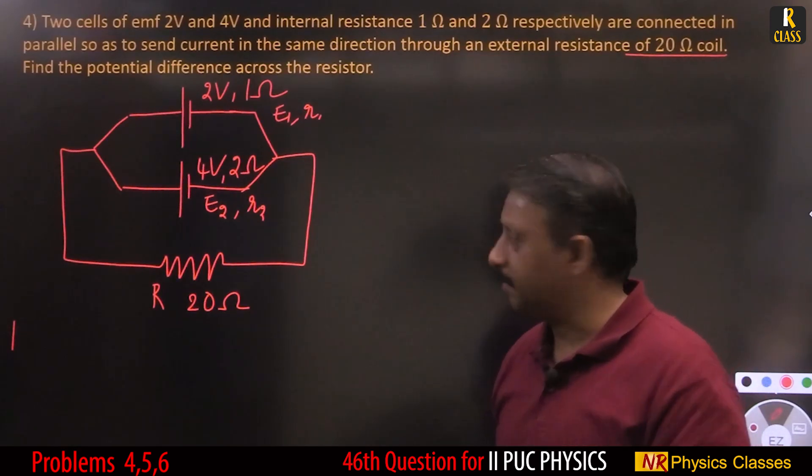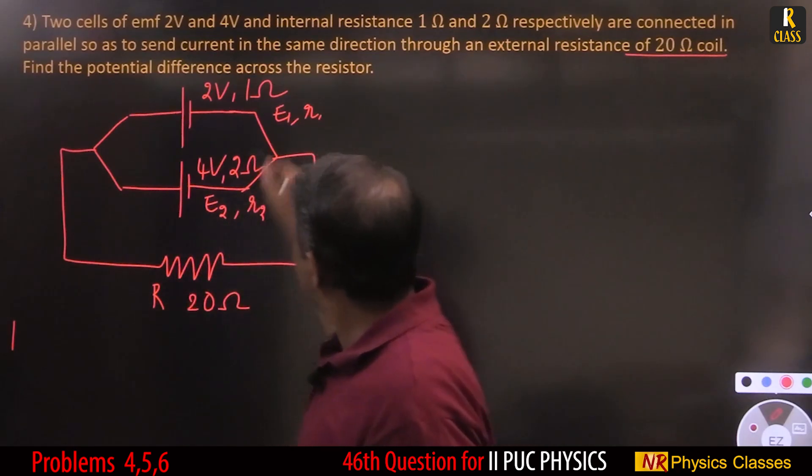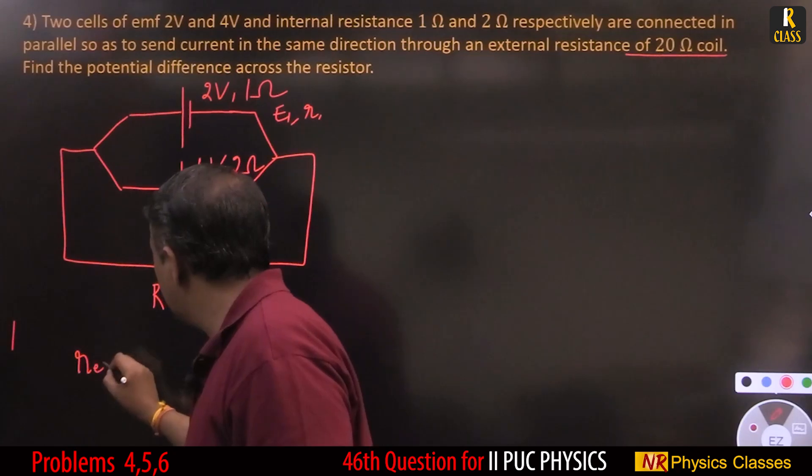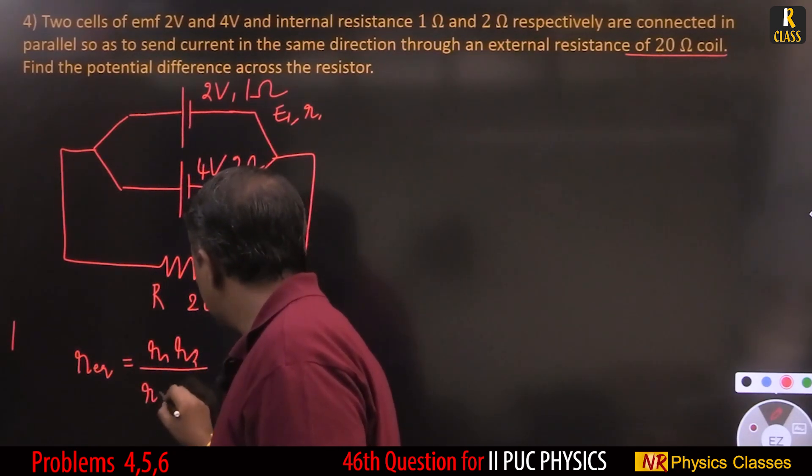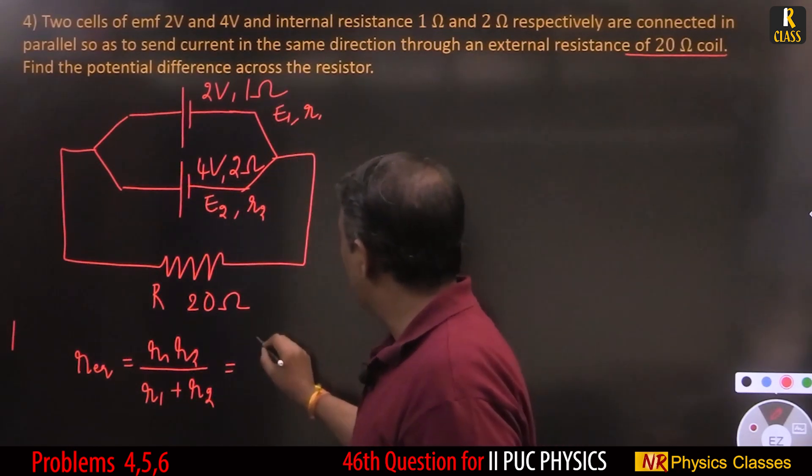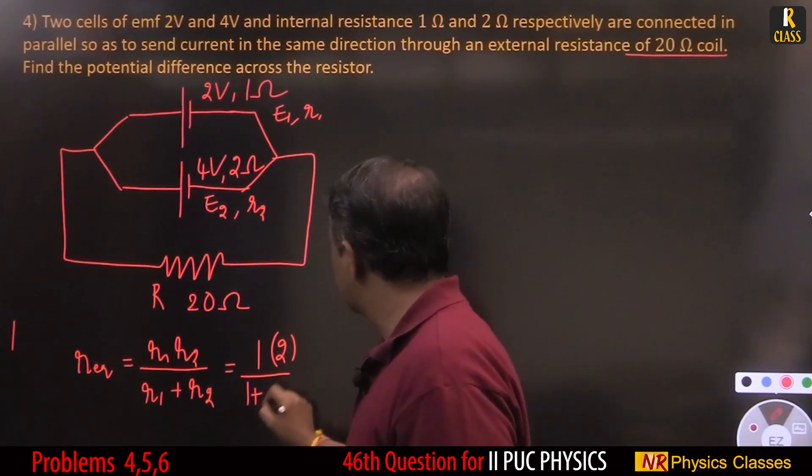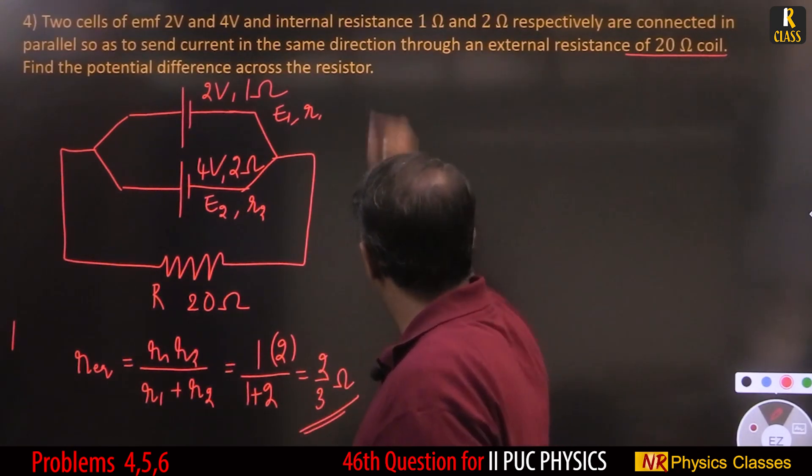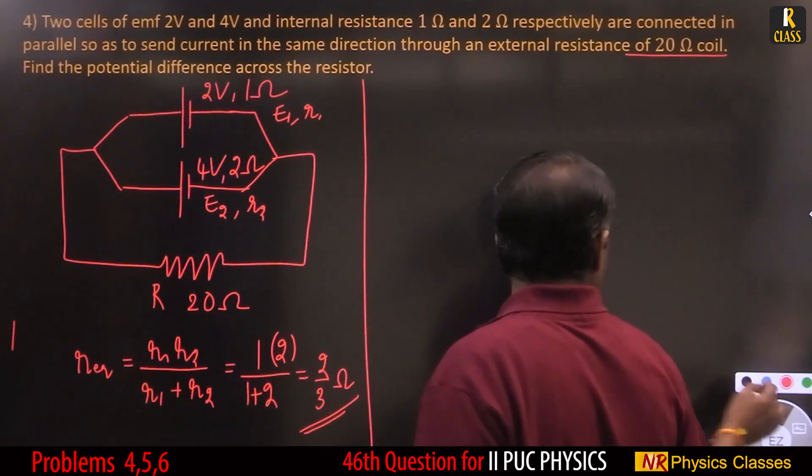These two internal resistances are in parallel so R equivalent equals R1·R2 divided by R1 plus R2. R1 is 1, R2 is 2, so 1 into 2 by 1 plus 2 equals 2 by 3. Therefore internal resistance is 2 by 3 ohm. Now EMF equivalent.